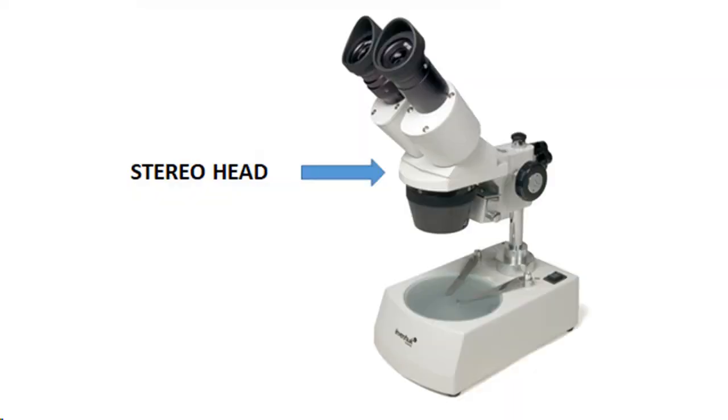The stereo head. This is the movable top portion of the microscope, and the stereo head holds the two adjustable eyepieces.